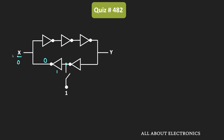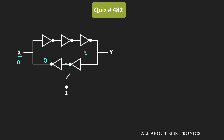This X output passes through the three NOT gates. Let's say the propagation delay of each logic gate is tp. After three gate delays, the Y output will become 1, because if the X input is 0 passing through three NOT gates, then the Y output will become 1. So after three gate delays, Y becomes 1.